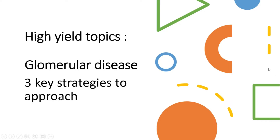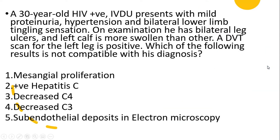Let's start with the MRCP style MCQ first. Read the question very carefully. If you read this question carefully, you will identify that it talks about cryoglobulinemia. The pointers are: the patient has proteinuria, hypertension, evidence of peripheral neuropathy, leg ulcers and DVT — all pointing towards cryoglobulinemia, which is associated with membranoproliferative glomerulonephritis type 1.